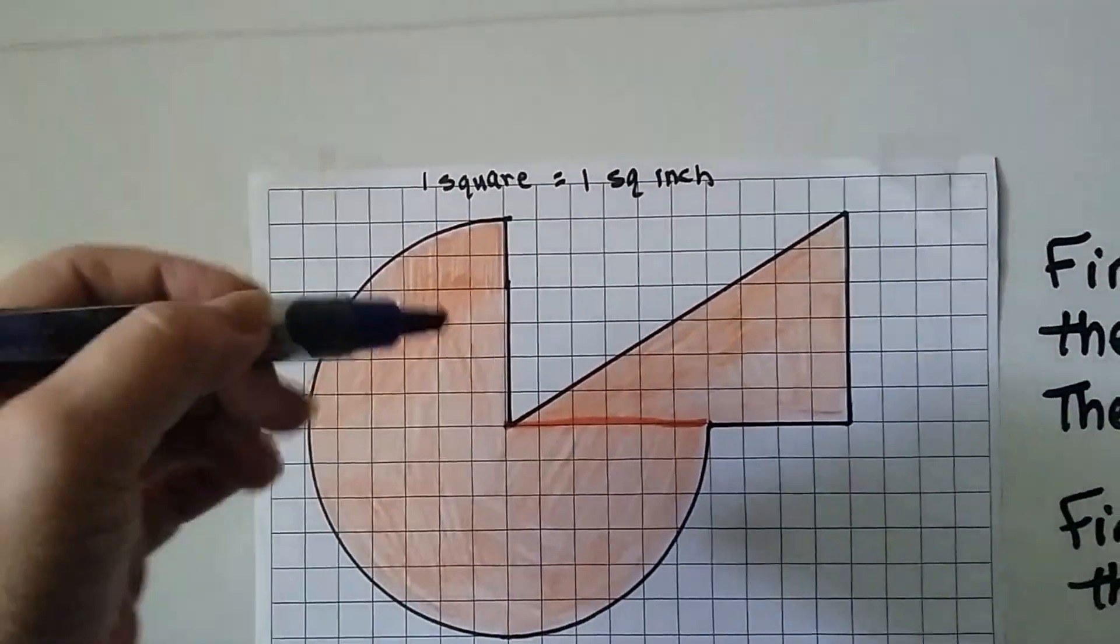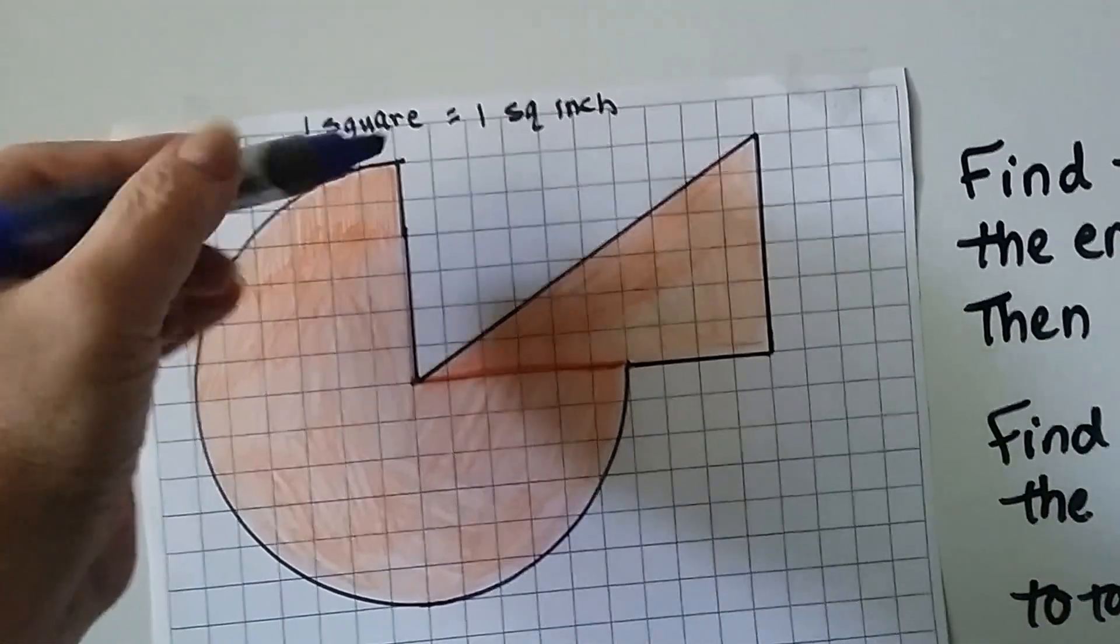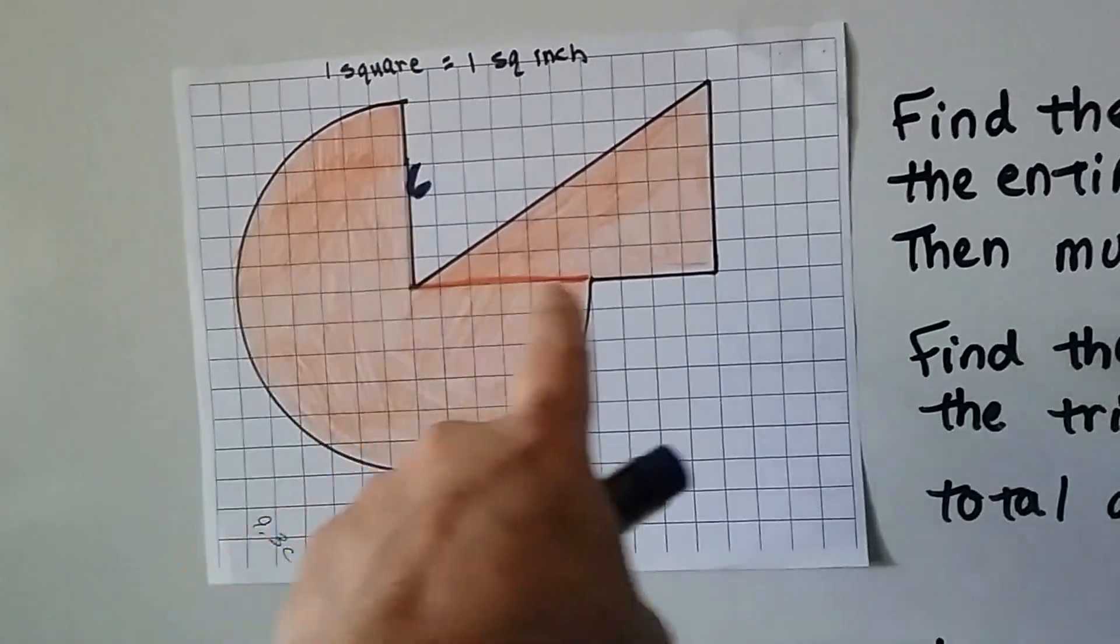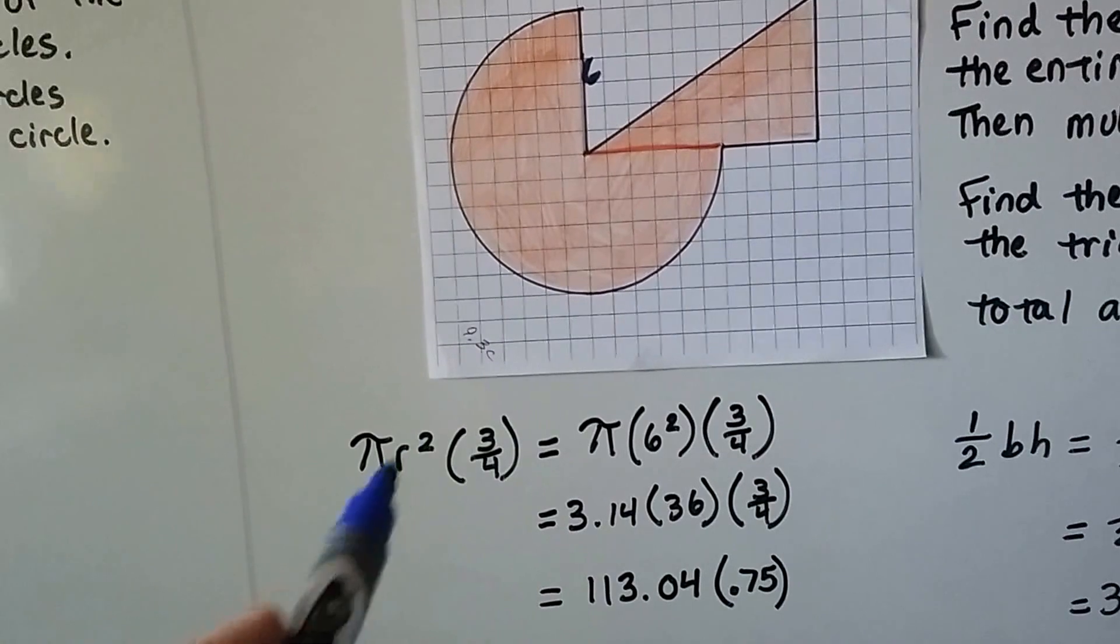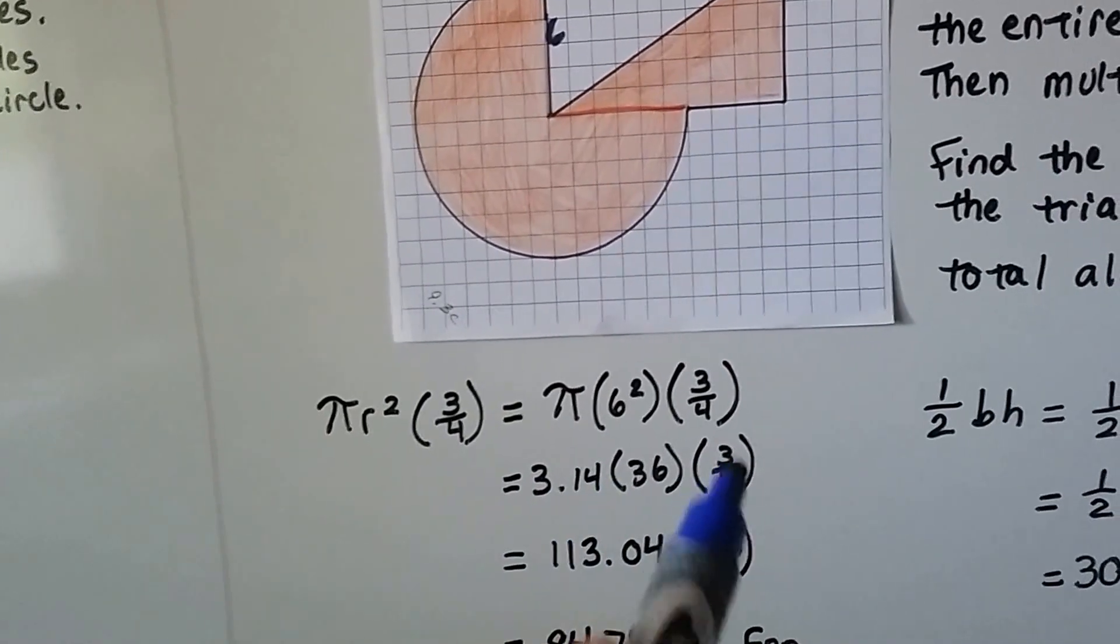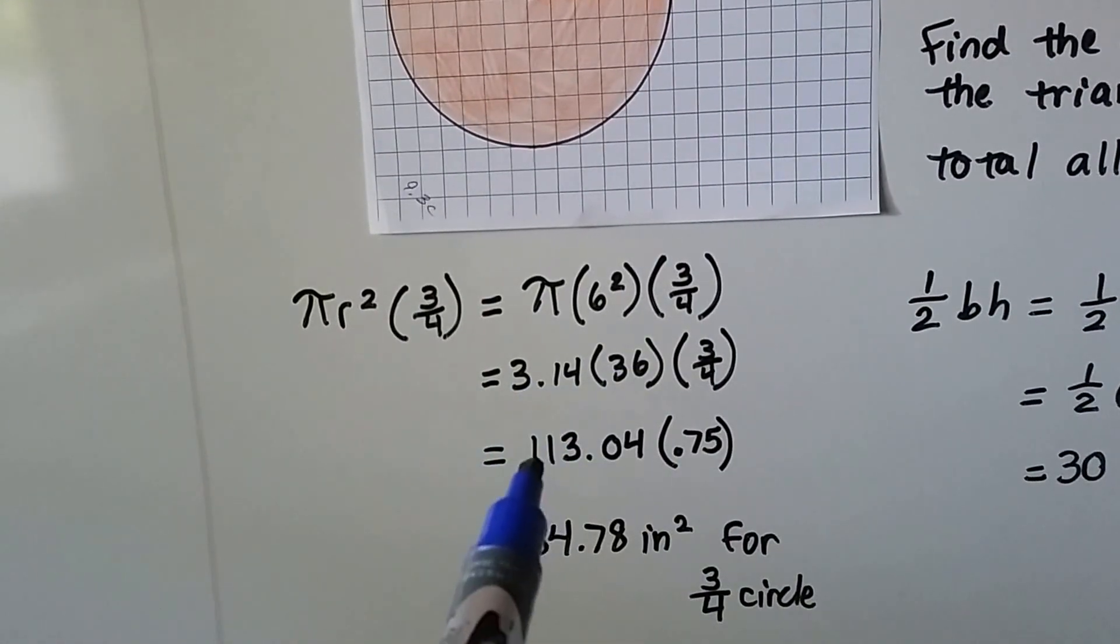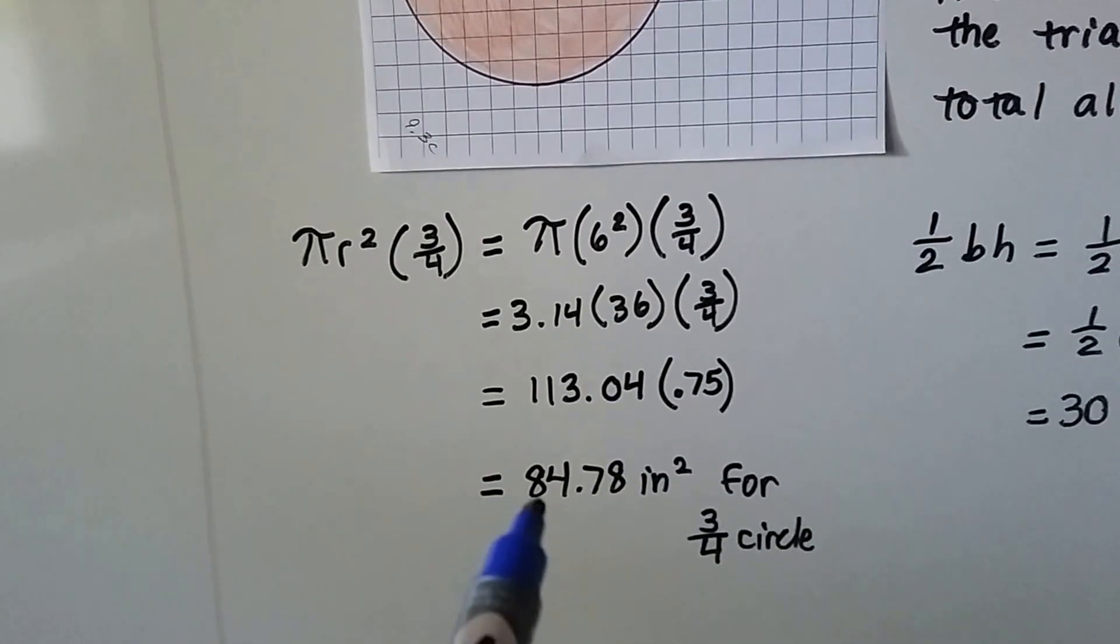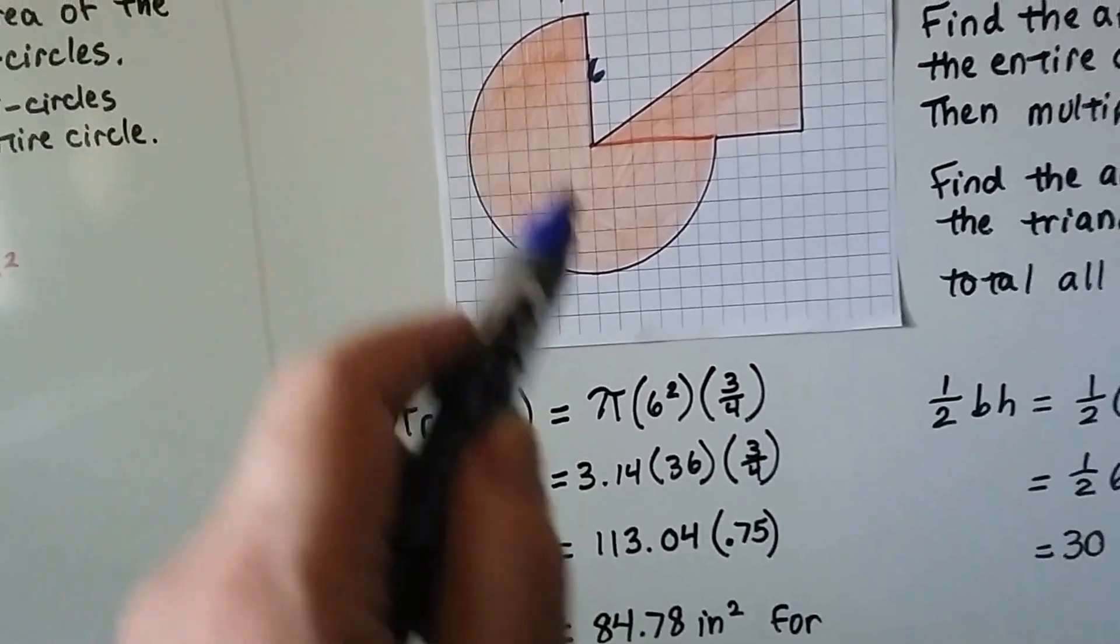We count the units. Now we're going to say that each square is a square inch, so we've got 1, 2, 3, 4, 5, 6 for our radius here. We're going to do πr²—that's 6 squared, that's 36. We need to multiply it by π and by 3/4. We could turn the 3/4 into 0.75. We multiply these two together and get 113.04, multiply it by 0.75, and we get 84.78 inches squared. That's for the 3/4 circle right here.